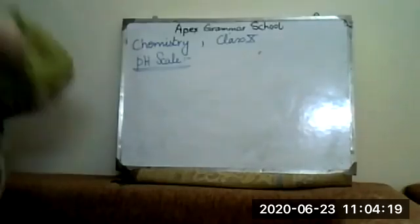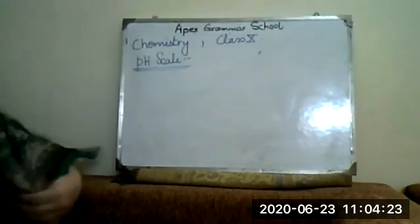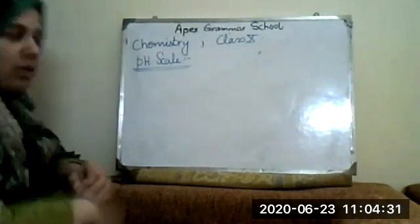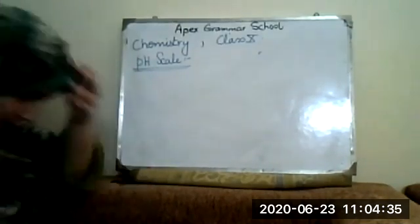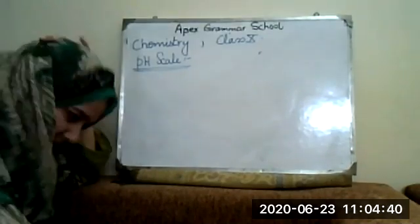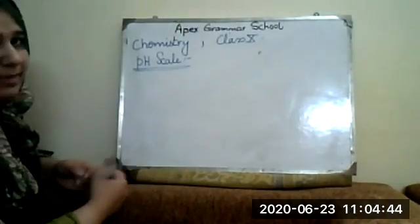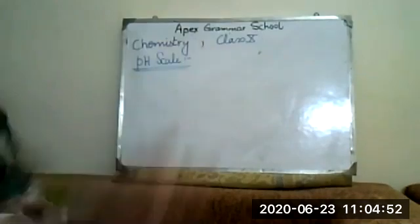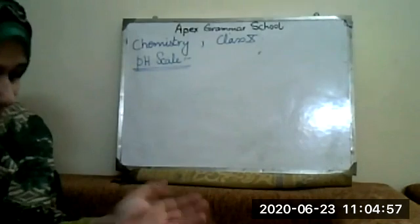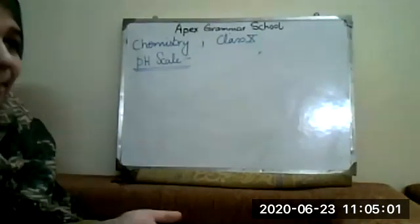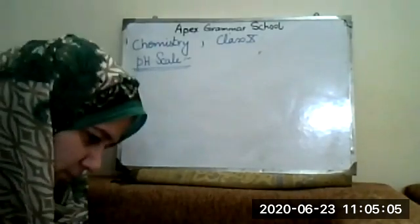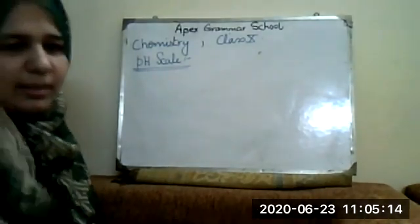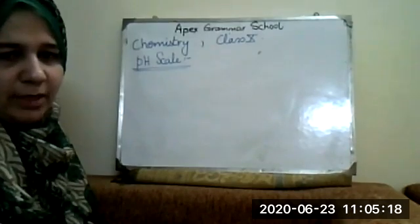We are going to start with the pH scale — what is pH, why we are measuring it, and what is the basic purpose of that. The pH scale is basically used to measure the pH of different compounds, whether they are acids, gases, salts, or anything else. If you have any kind of solid, liquid, or powder, you can make a mixture and measure its pH using pH paper.